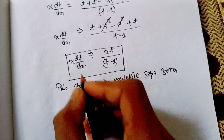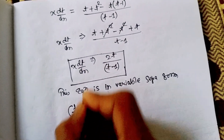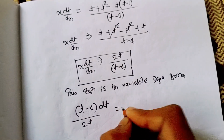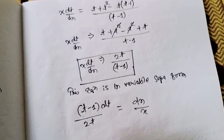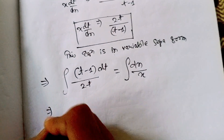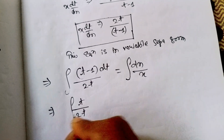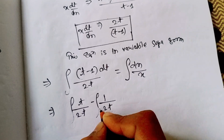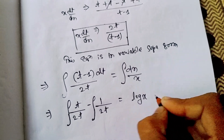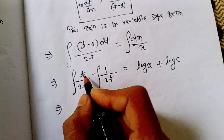तो dt के terms को एक तरफ और dx को दूसरी तरफ लिख देते हैं। By cross multiplication: (t−1)/(2t) dt = dx/x। अब integrate करते हैं both sides। (t−1)/(2t) को separate करें: t/(2t) − 1/(2t) = 1/2 − 1/(2t)। और dx/x का integration = log x + log c।